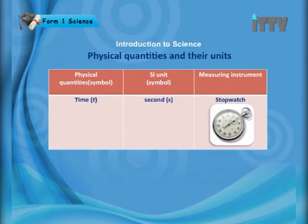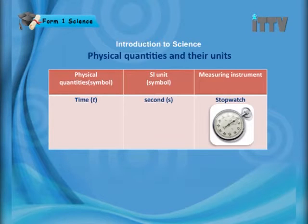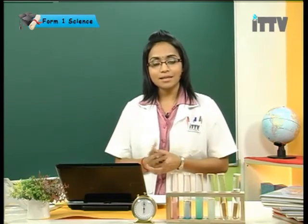Next we learn about time. The symbol for time is a small t, and the SI unit for time is seconds, written as a small s. The measuring instrument used for time is a stopwatch — you can also use a wristwatch or digital clock. To recap: length uses meter and a meter ruler; mass uses kilogram and a lever or beam balance; time uses seconds and a stopwatch.